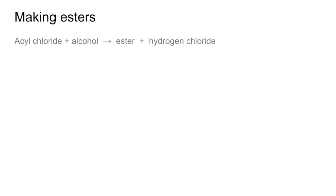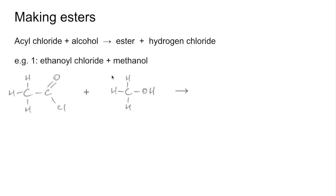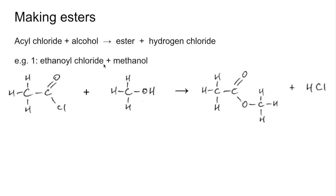Esters first. Acyl chloride plus alcohol gives us an ester and hydrogen chloride. The first example is ethanoyl chloride and methanol. Remember we're just going to lasso out the HCl and stick the methanol's oxygen onto the acyl chloride. That's the structure of the ester, and we get HCl produced as well. This ester would be called methyl ethanoate.